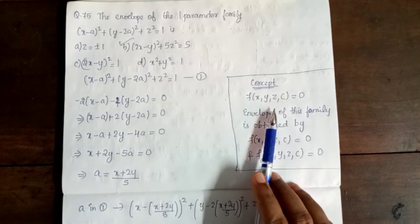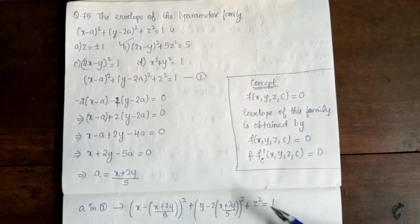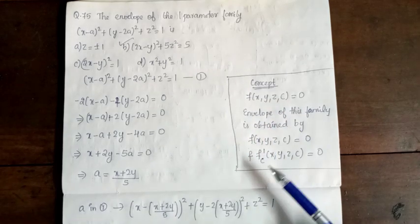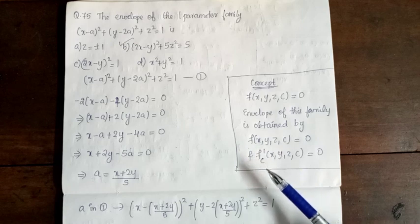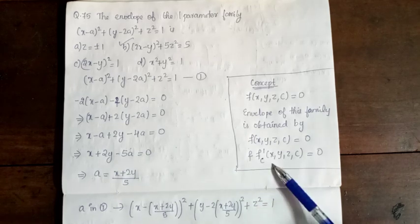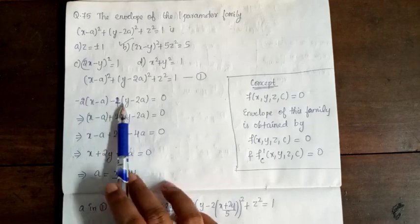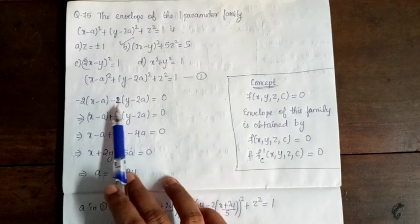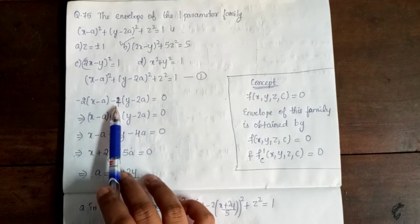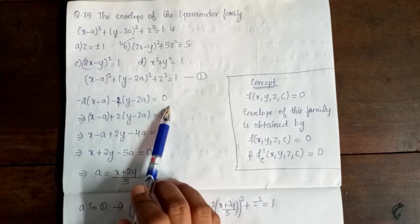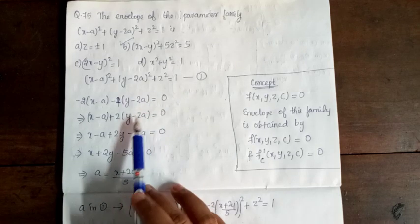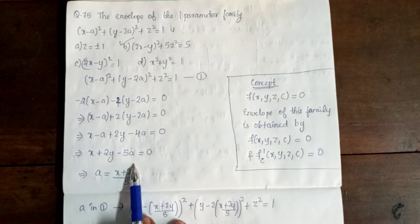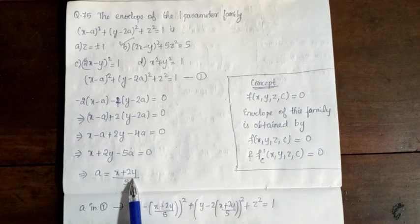We have the family F(x, y, z, a) = 0. Differentiating with respect to the parameter a and solving: −2(x − a) − 4(y − 2a) = 0. Solving for a gives a = (x + 2y) / 5.